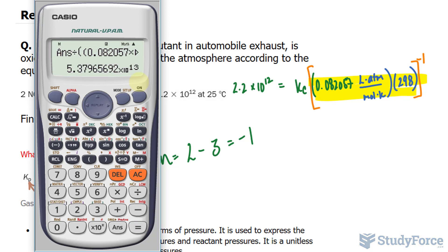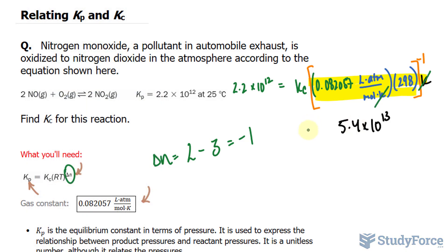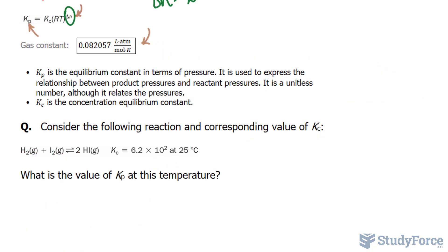This should give us Kc. And Kc is unitless. We end up with 5.37 to two significant figures. This should be 5.4 times 10 to the power of 13. And Kc is unitless, as I mentioned. So you don't need to write down all this extra stuff here. In question number two, we're asked, consider the following reaction and the corresponding value of Kc. What is the value of Kp at this temperature?